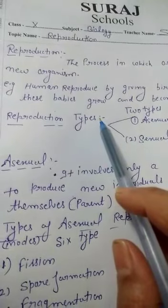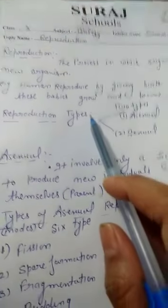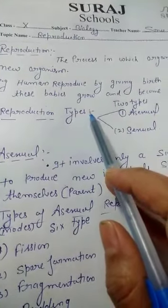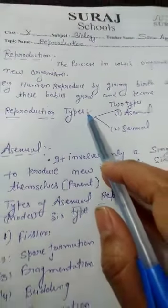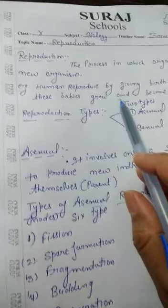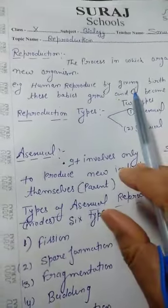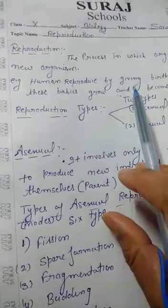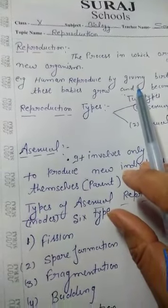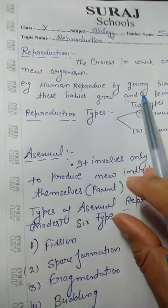First of all, students, what do we mean by reproduction? Reproduction means — 're' means again — it is the process in which organisms produce new offspring similar to themselves. For example, human beings produce human beings, cat species produce cats, dog species produce dogs.